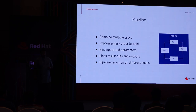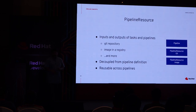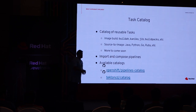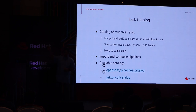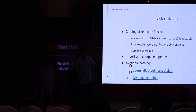A pipeline combines multiple tasks, expresses tasks in order, and has inputs and output parameters. It can link one task's output as input to another, and tasks can run on different nodes — basically distributed execution. You can also use a task and pipeline catalog, which consists of reusable tasks that can be defined and made available. You just run OC commands to install those tasks, and once they're inside, you can start running the pipelines.